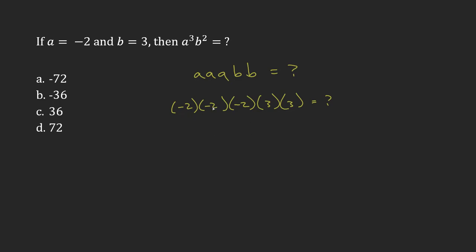Negative times negative is going to give me a positive. 2 times 2 is 4. So that takes care of my first part.